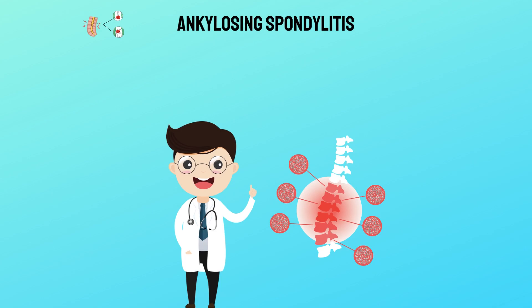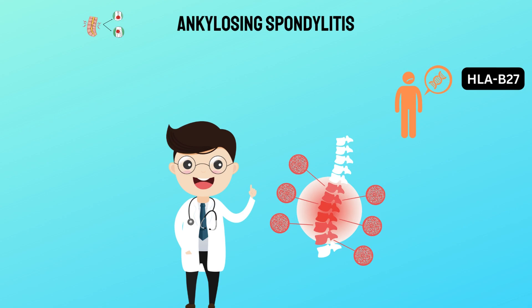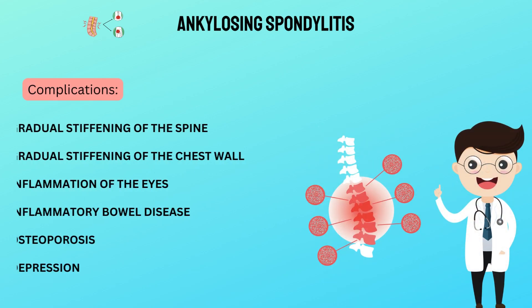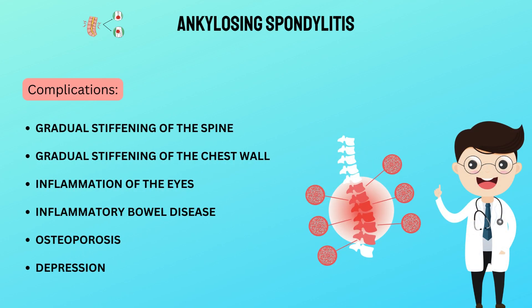A family history of AS and having the HLA-B27 gene are the two biggest risk factors. Being male is another risk factor, as men are found to have AS more often than women. Possible complications can include gradual stiffening of the spine and chest wall, inflammation of the eyes, inflammatory bowel disease, weakening of the bones called osteoporosis, and depression.